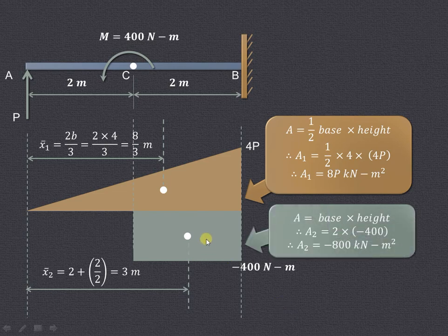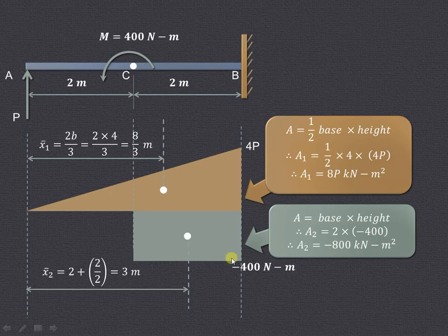Similarly area for this rectangle will be equal to base into height. So base is 2 meter and height is minus 400 Nm, that is the anticlockwise moment which is acting and which is uniform between point C and B.